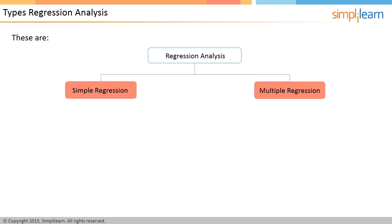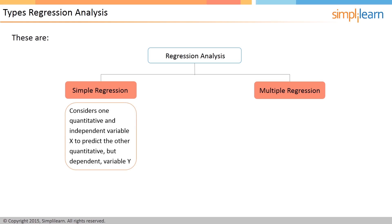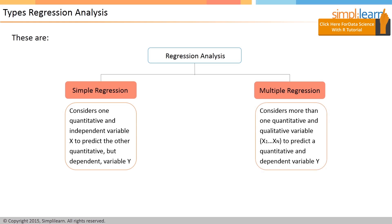Let's look at the two main types of regression analysis: simple linear regression and multiple linear regression. Both of these statistical methods use a linear equation to model the relationship between two or more variables. Simple linear regression considers one quantitative and independent variable X to predict the other quantitative but dependent variable Y. Multiple linear regression considers more than one quantitative and qualitative variable to predict a quantitative and dependent variable Y.